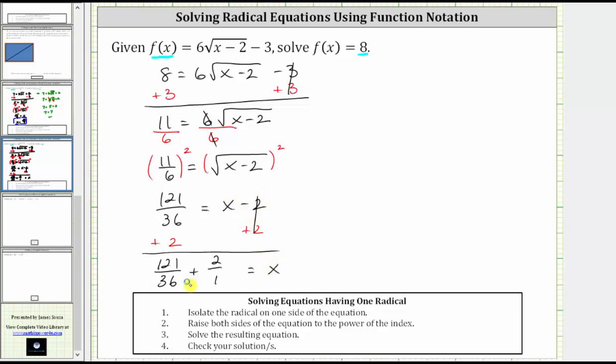So the solution is equal to this sum, but of course we must obtain a common denominator. The least common denominator is 36, and therefore we need to write 2/1 as an equivalent fraction with a denominator of 36, and therefore we multiply the numerator and denominator by 36. This gives us 121/36 + 72/36 = x.